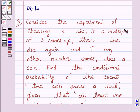Consider the experiment of throwing a die. If a multiple of 3 comes up, throw the die again, and if any other number comes, toss a coin.